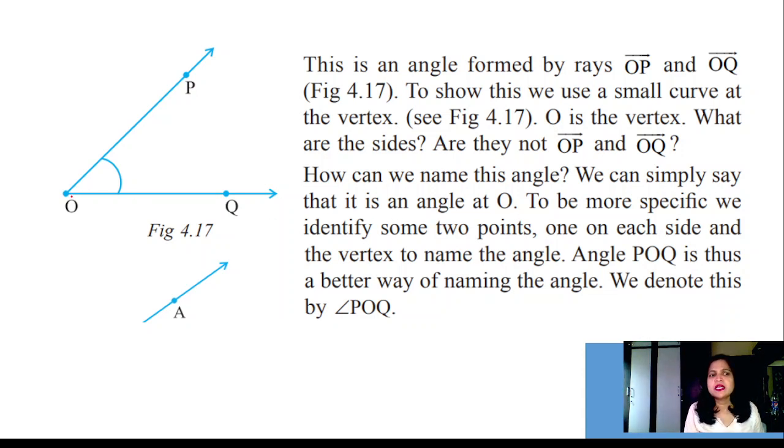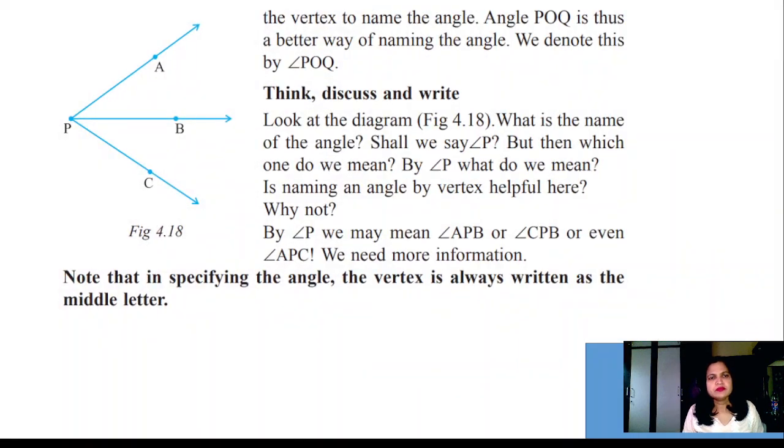We are naming this as vertex O, right? But to be more specific, we identify two points, one on each side, and the vertex to name the angle. Angle POQ - we name it like this.